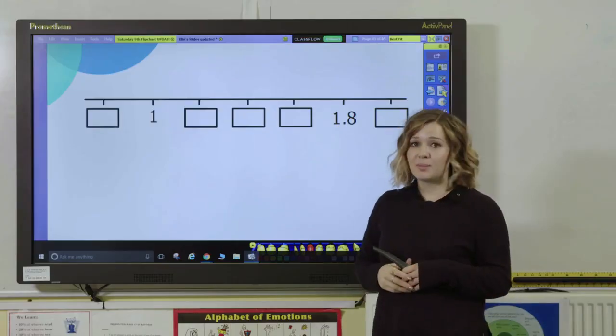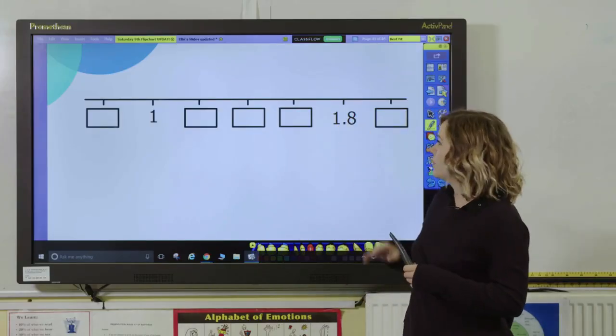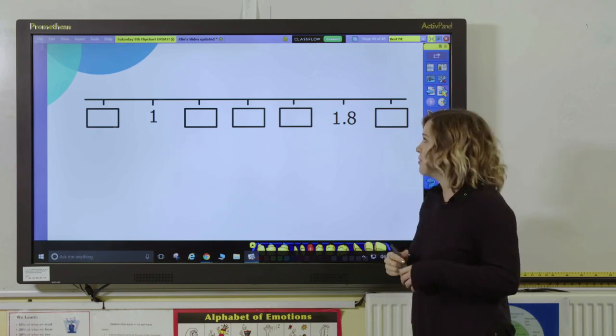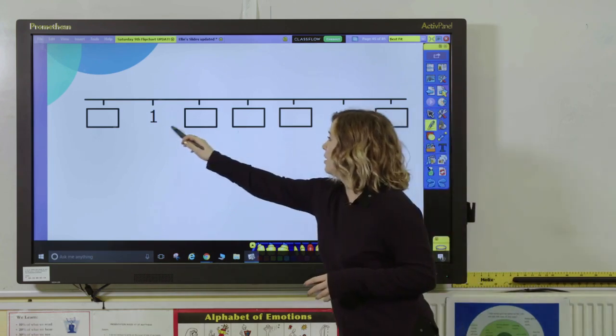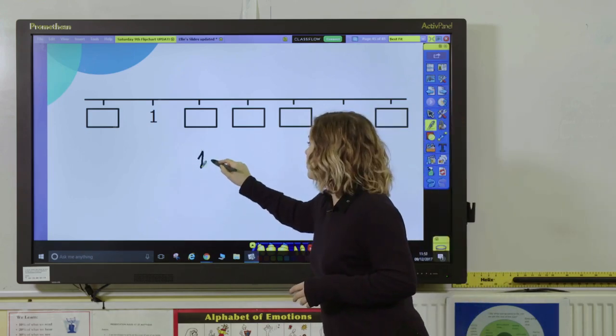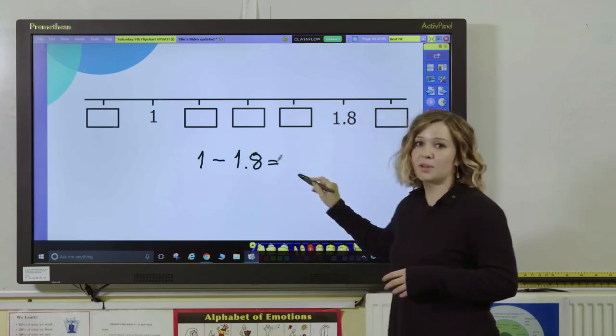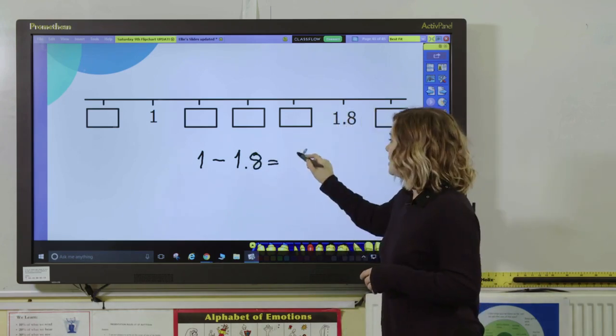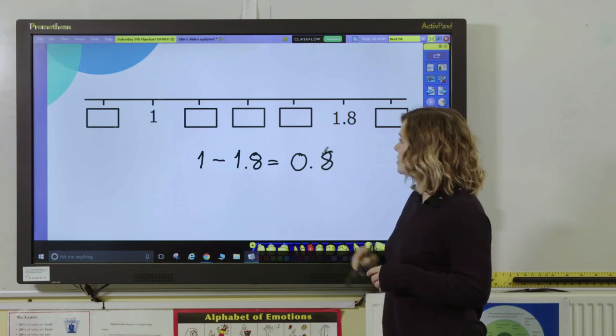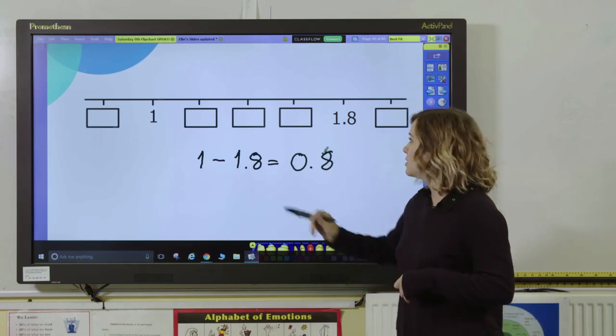So if we look at this one which is a bit trickier and maybe something that you'd see in upper key stage 2 because we're involving decimals, we can apply the same rules. Our two known values are 1 and 1.8. So our first step was to find the difference between those two. The difference between 1 and 1.8 is 0.8 and then we're going to look at how many equal parts are between those two values.